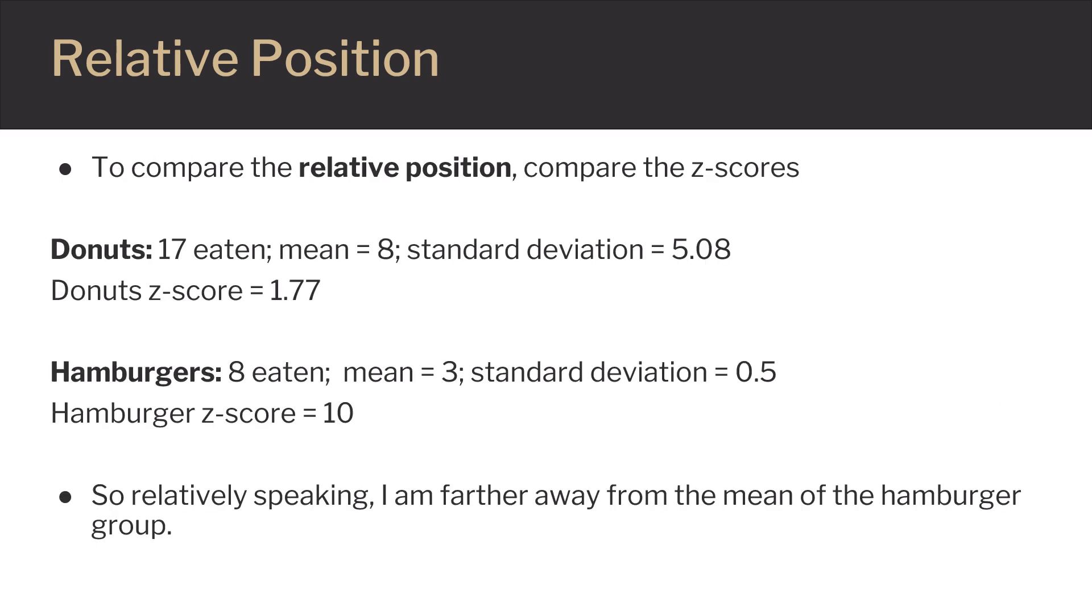To compare the relative position, you compare the Z-scores. In our donut example, 17 were eaten, the mean was 8, and standard deviation was 5.08. The Z-score for our donuts was 1.77.